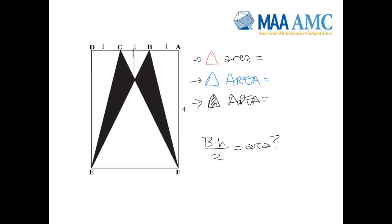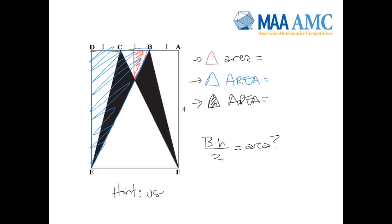Now let's look at the triangle that we're interested in — it's this triangle inside. I'm going to shade it in red, but let's look at this half of the triangle that I'm interested in. Notice that this little triangle is a similar triangle to this big one, because it fits right inside. And so that's the last bit of the hint. This is a common thing in geometry problems: use similar triangles.